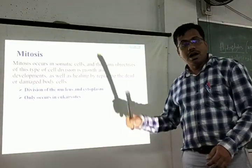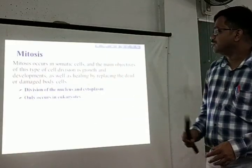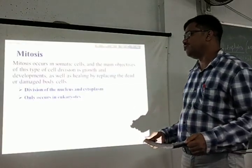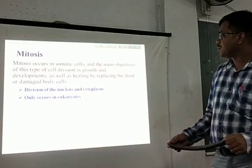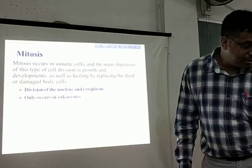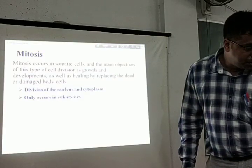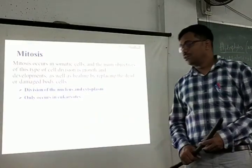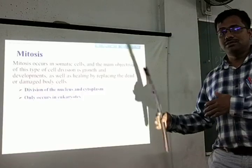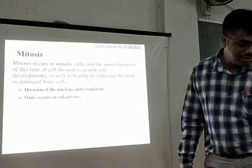Mitosis. After interphase, cells enter the mitotic phase. Mitosis occurs in somatic cells, and the main objective is growth, development, and healing by replacing dead or damaged body cells. Division of the nucleus and cytoplasm occurs in this case, and mitosis only occurs in eukaryotes. Prokaryotic cells divide by another process called amitosis, or binary fission — bacteria divide by this method.